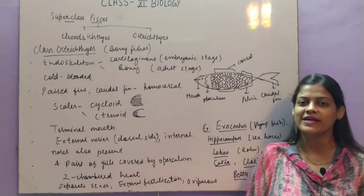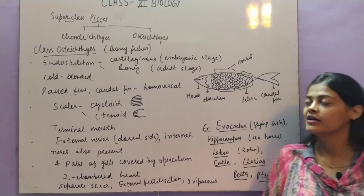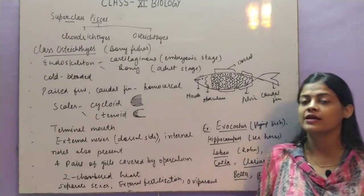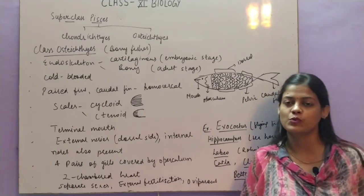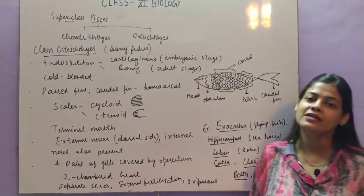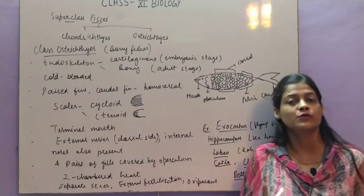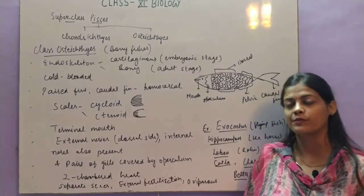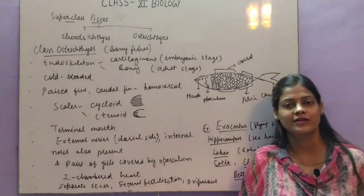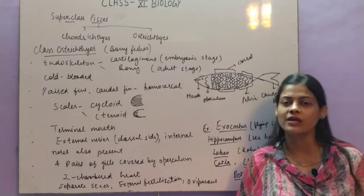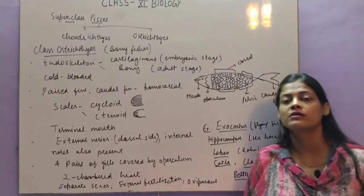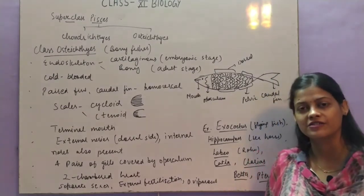The next class of super class Pisces is Osteichthyes, also called bony fishes. Their characteristics are generally opposite to cartilaginous fishes. Their endoskeleton is cartilaginous only in the embryonic stage, but in the adult stage it is converted into a bony endoskeleton. So they are stronger compared to cartilaginous fishes.